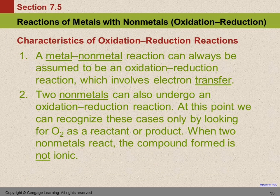So let's look a little more at these oxidation reduction reactions. Anytime we have a metal reacting with a nonmetal, we can always assume that that's an oxidation reduction reaction involving electron transfer. You can also have oxidation reduction reactions between two nonmetals. And we're only going to learn about one kind, and that's when oxygen is either a reactant or a product. Now when you have two nonmetals forming a compound, the compound's not ionic, right?